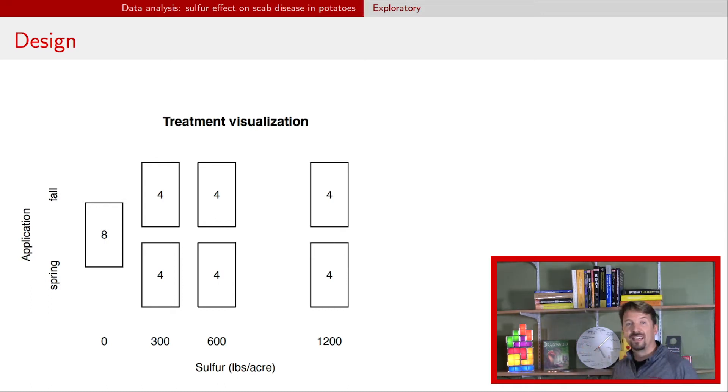So this is another way of depicting that experimental design, but now it has to do more with the treatment levels. So you can see we have fall and spring and we have 300, 600, 1200. So there's four of each of those, but then there is the zero sulfur. And since fall and spring doesn't matter, I've kind of written the box here to span both of those. And there were eight observations that were at zero sulfur level.